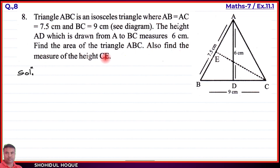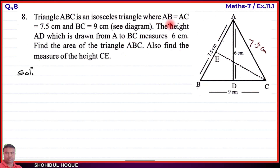Now for question number 8: triangle ABC is given where AB equals AC — two sides are equal — each measuring 7.5 centimeters. The base BC measures 9 centimeters. The height AD is drawn from A perpendicular to BC at 90 degrees, and AD measures 6 centimeters.